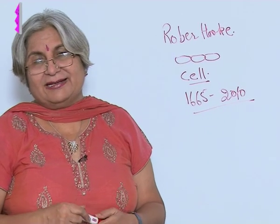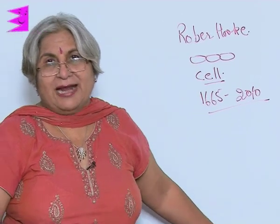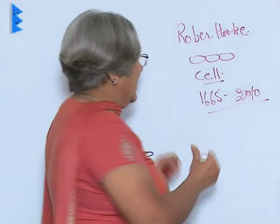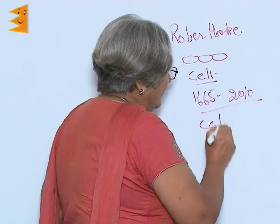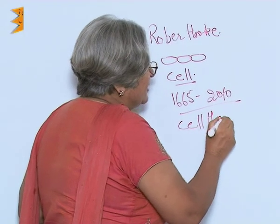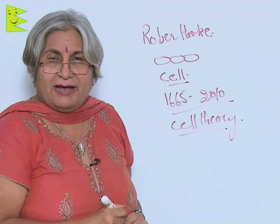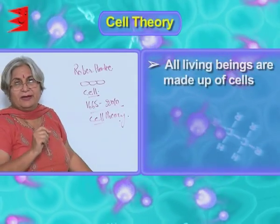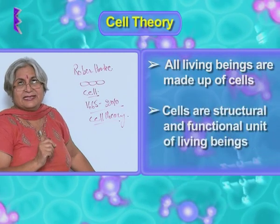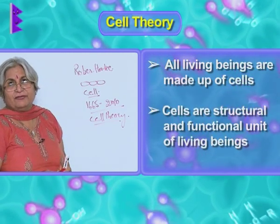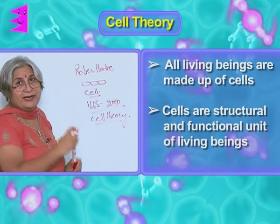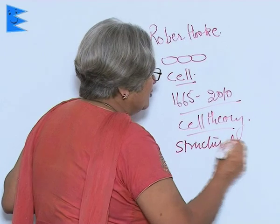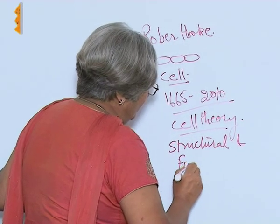Later on there were many scientists like Robert Brown, Schleiden, and Schwann who gave various information about the cell and called it the cell theory. According to this theory, all living beings are made up of cells, and cells are the structural and functional unit of living beings. This point is very important — structural and functional unit of living beings.